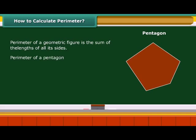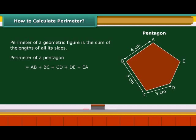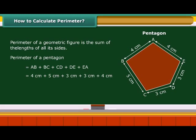Suppose the lengths of the five sides A, B, C, D, and E are: AB as 4 cm, BC as 5 cm, CD as 3 cm, DE as 3 cm, and EA as 4 cm. The perimeter of the pentagon is 4 cm plus 5 cm plus 3 cm plus 3 cm plus 4 cm — that is equal to 19 cm.